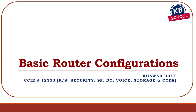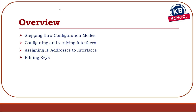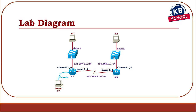This video is for basic router configuration. The main topics covered include stepping through the configuration modes, configuring and verifying the interfaces, assigning IP addresses to the interfaces, and some shortcuts for editing — for example, moving the cursor to the beginning or end of a line, retrieving previous commands, and navigating command history. Our main objective is to configure the two routers to connect to each other.